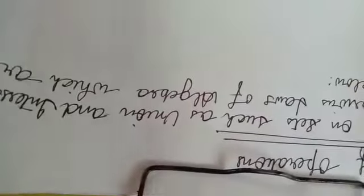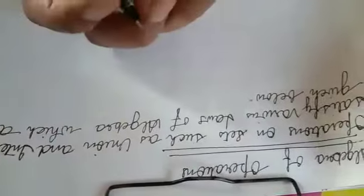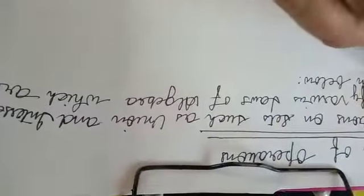We will look at which laws of algebra are established when we apply operations like intersection and union on sets. The laws we will study here are commutative law, associative law, and distributive law — the same basic laws we studied in earlier classes. We will start with the first: commutative law.